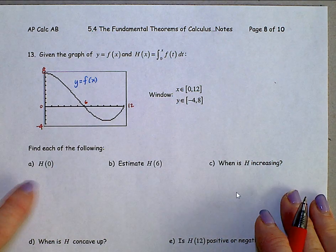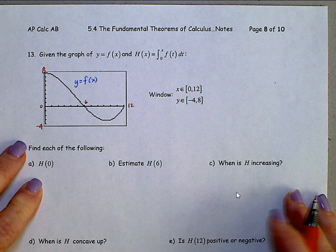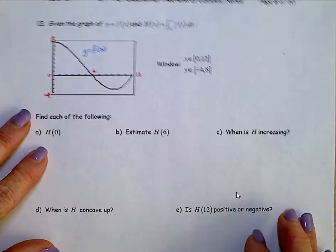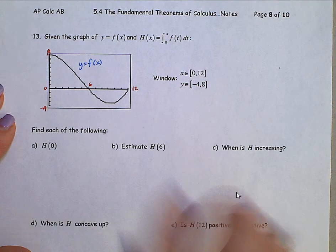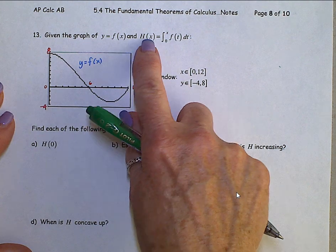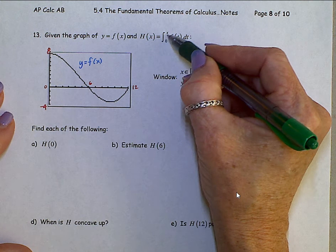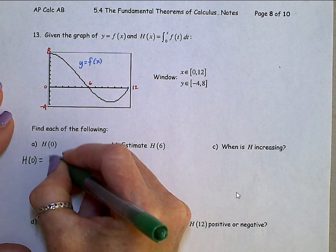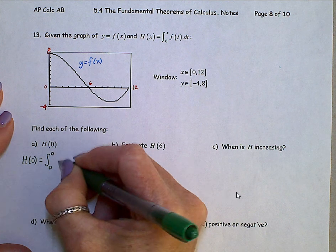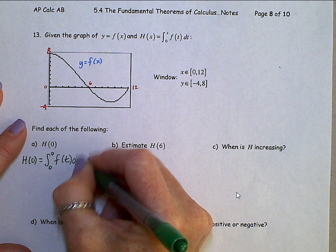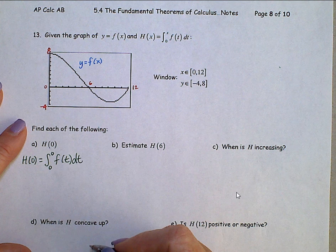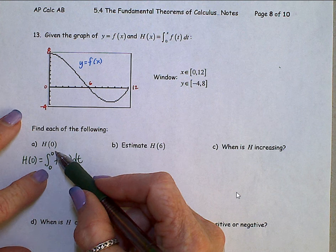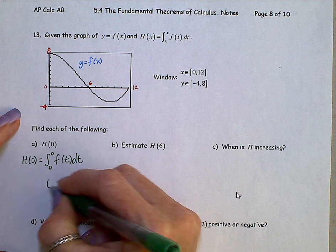Now let's look at this one. We need to find h of 0. The h function is this right here. So h of 0 is to replace this x with 0. h of 0 is the integral from 0 to 0 of f of t dt. That means find the area underneath this f function from 0 to 0, which is nothing, 0.